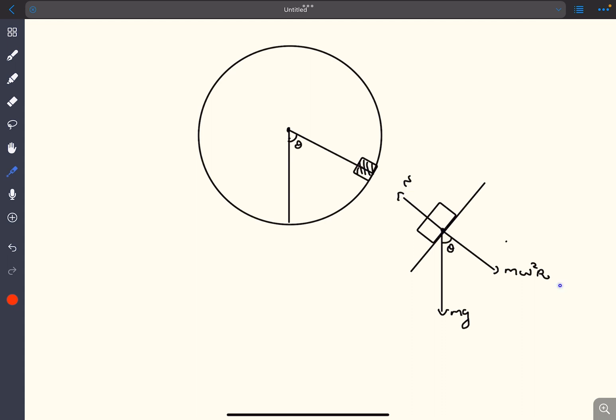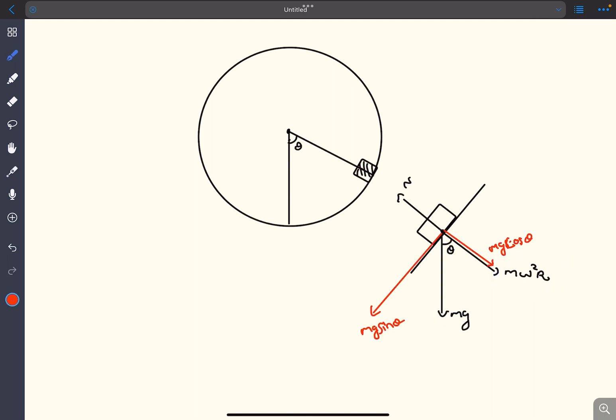The forces on the block are: clearly there is normal from the surface. If we take the frame of reference as the cylinder we have to apply a radially outward centrifugal force, and there is weight of the block which can be broken down into mg sin theta and mg cos theta. Hence the friction will act in this particular direction.